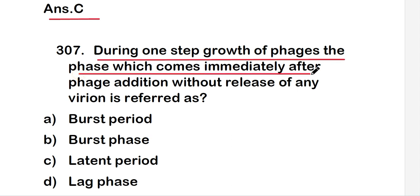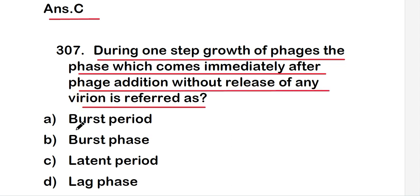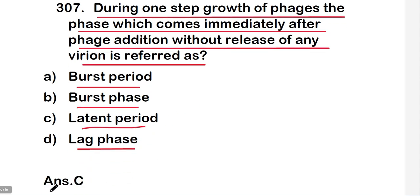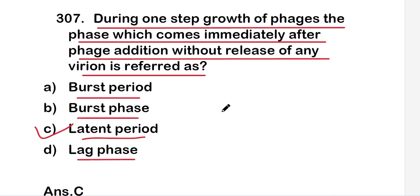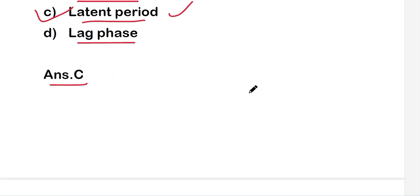The next question is: during one-step growth of phages, the phase which comes immediately after phage addition without release of any virion is referred to as — burst period, burst phase, latent period, or lag phase? The right answer is option C, that is latent period. The phase immediately after phage addition without release of any virion is referred to as latent period.